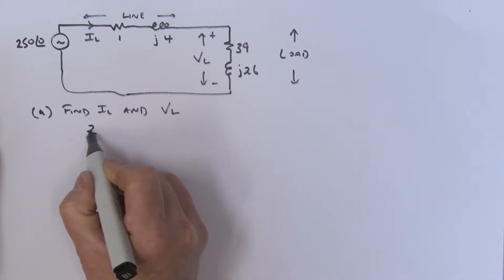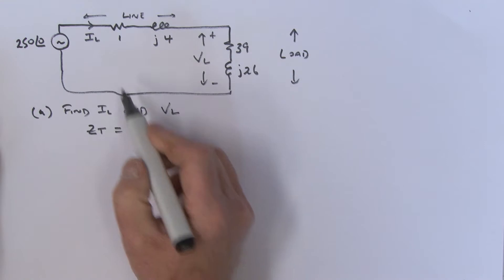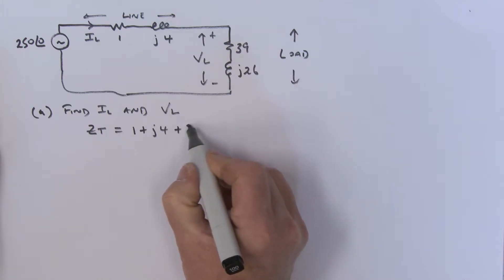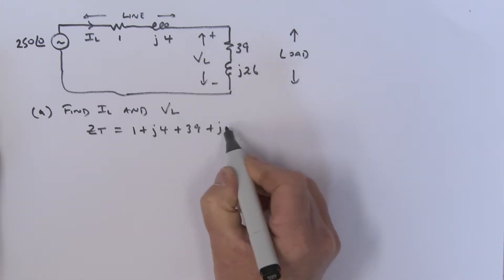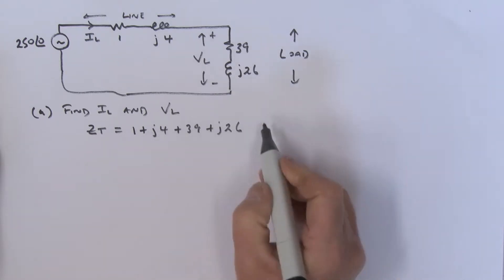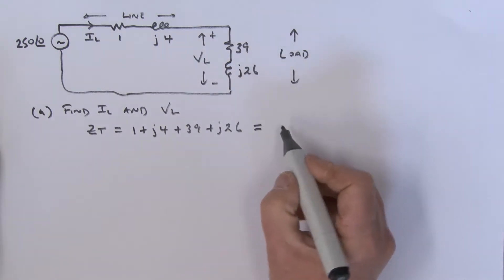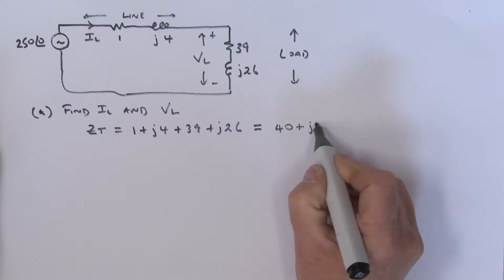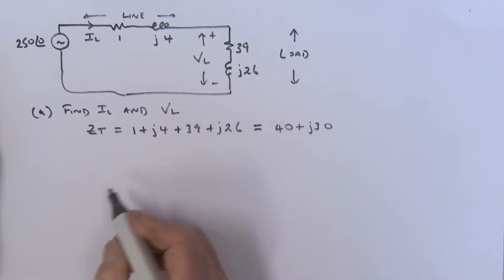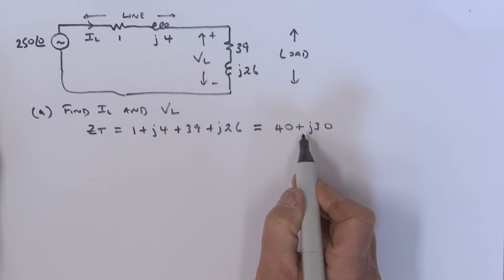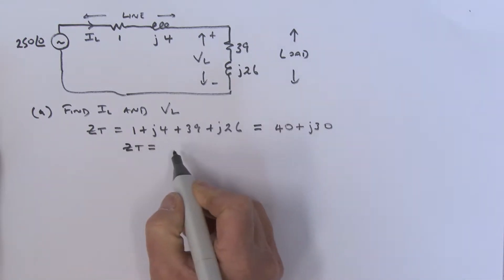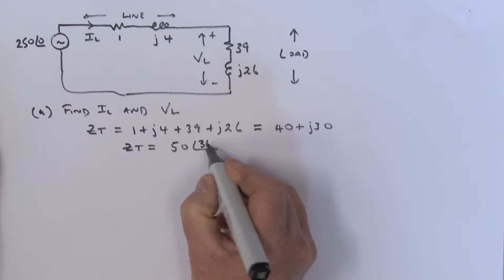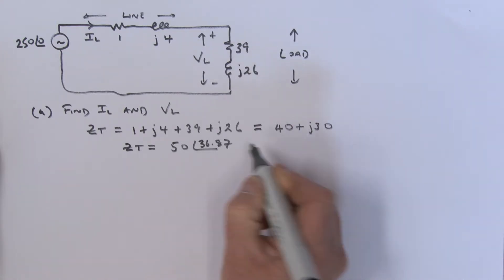In order to find the current IL, we need to find the total impedance ZT. It's a series circuit, so that's just 1 + j4, plus 39 + j26. Adding the real and imaginary parts gives us 40 + j30.